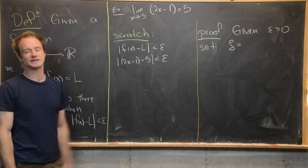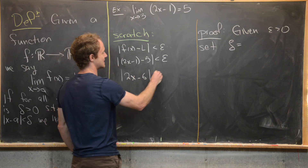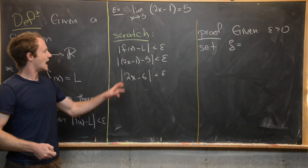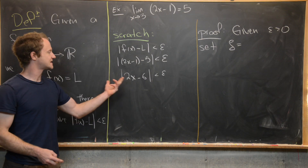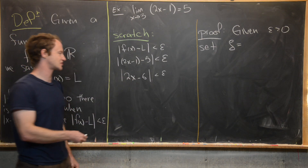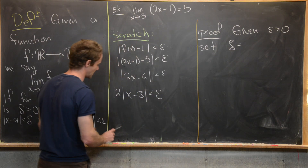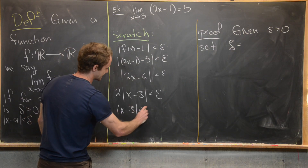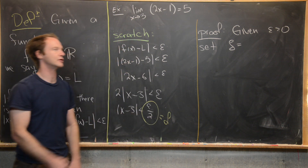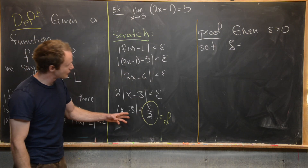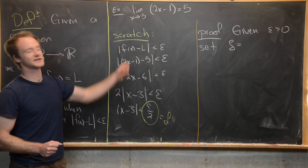Simplifying |2x − 1 − 5| < epsilon gives |2x − 6| < epsilon. We can factor out a 2 to get 2|x − 3| < epsilon, which means |x − 3| < epsilon/2. This tells us delta should equal epsilon/2. Now we write the proof, which involves putting everything in complete sentences and reversing the calculation.